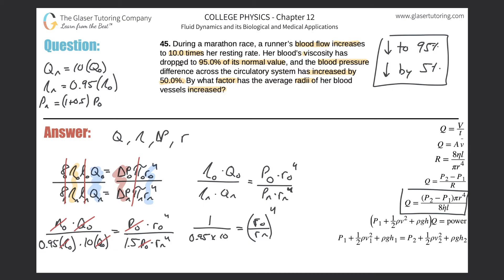So 0.105 equals (r_old over r_new) to the fourth. To get rid of the fourth power, raise both sides to the one-fourth power — the fourths cancel on the right. Now r_old over r_new equals 0.105 raised to the one-fourth. Plugging that into the calculator gives approximately 0.569, or about 0.570 with rounding.